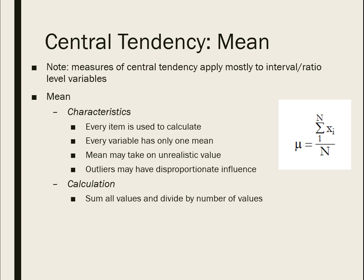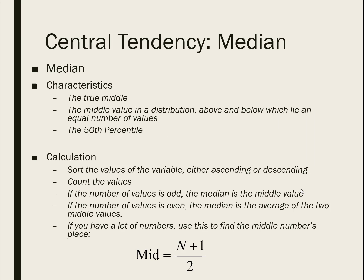The mean is heavily influenced by really large or really small values relative to where most of the data are — and those are called outliers. Because the mean is calculated by taking all values, adding them up, and dividing by the total number, a couple of really big or really small numbers will influence the overall value. The mean is symbolized with the mu symbol — that Greek letter. When you see it, associate it with the average, particularly the mean.